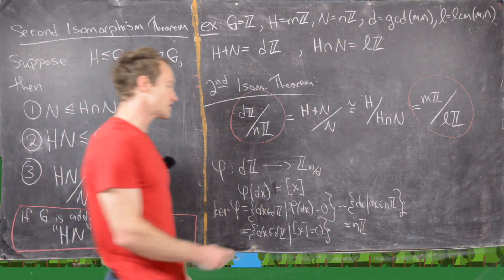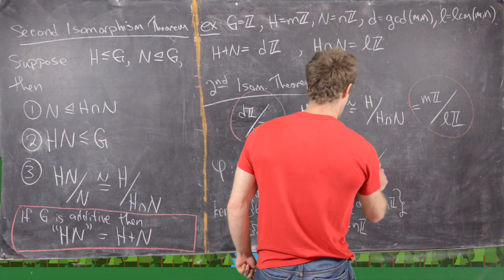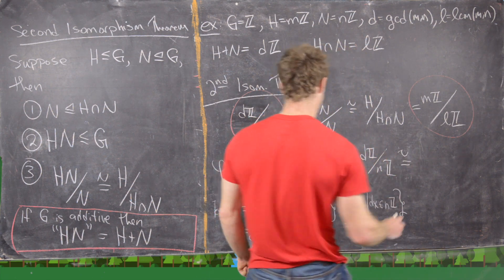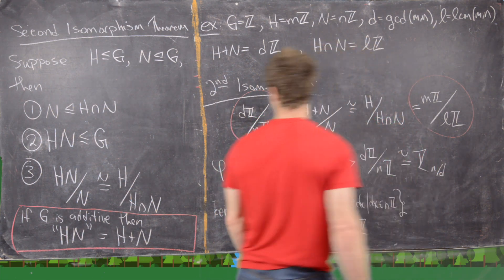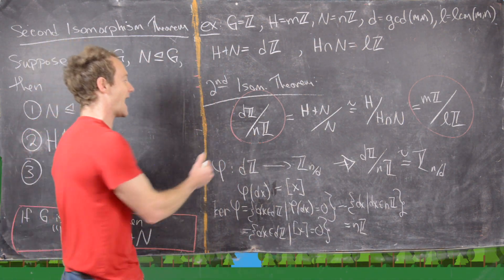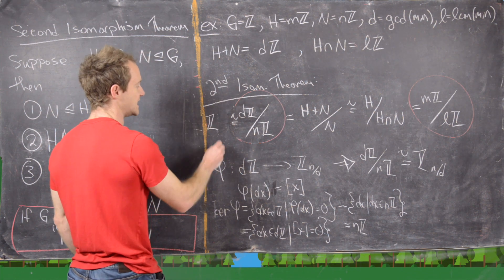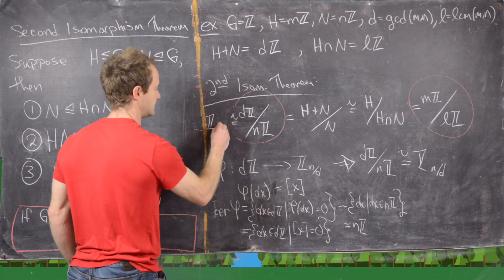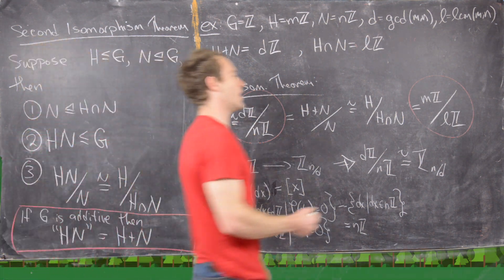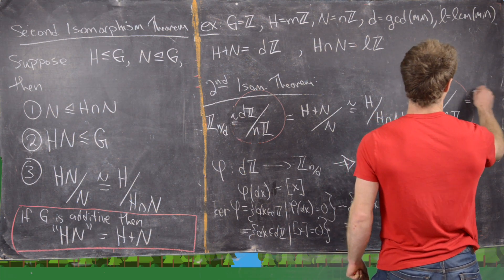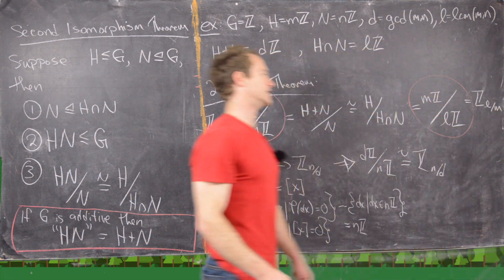By the first isomorphism theorem, Dℤ mod nℤ is isomorphic to ℤ_{N/D}. Adding that to the left-hand side, we have ℤ_{N/D} on the left. Similarly, using the same argument on the right-hand side, mℤ mod Lℤ is isomorphic to ℤ_{L/M}.